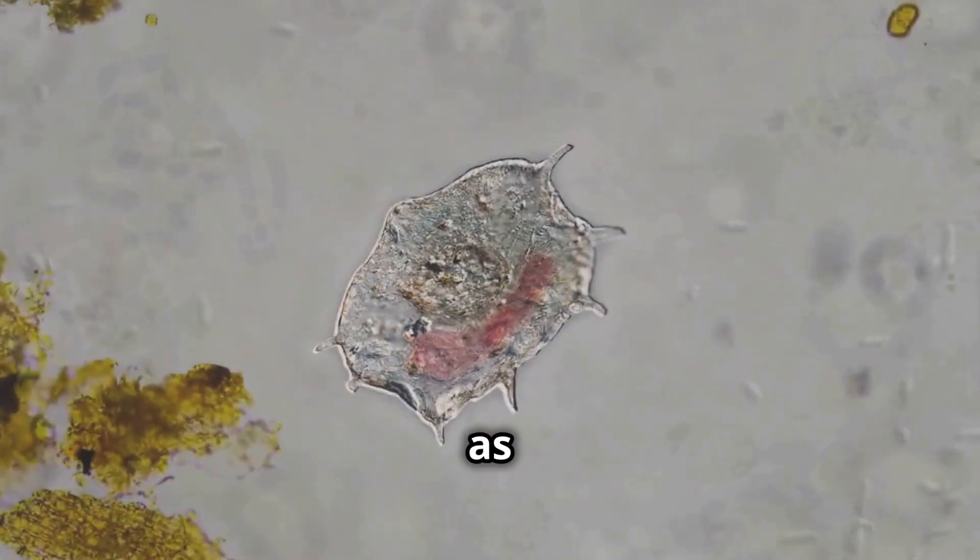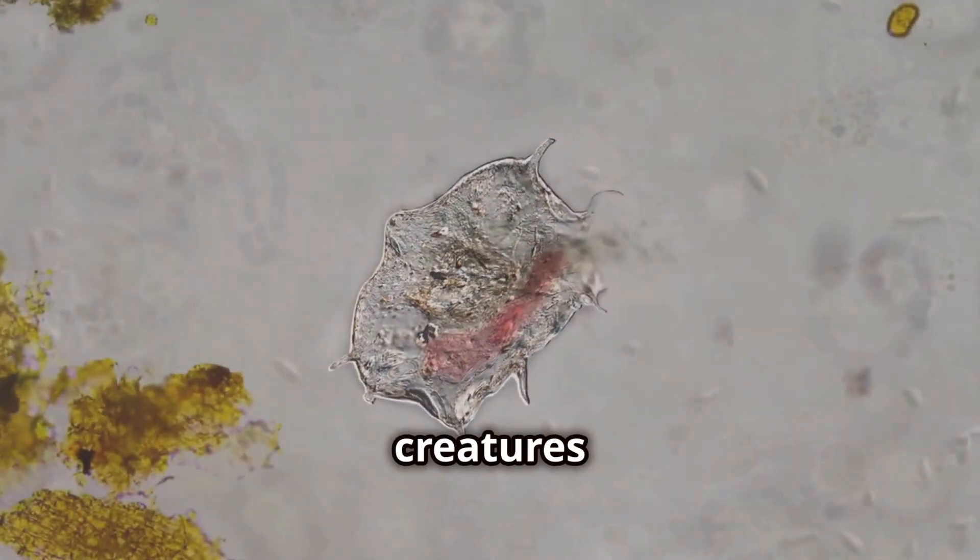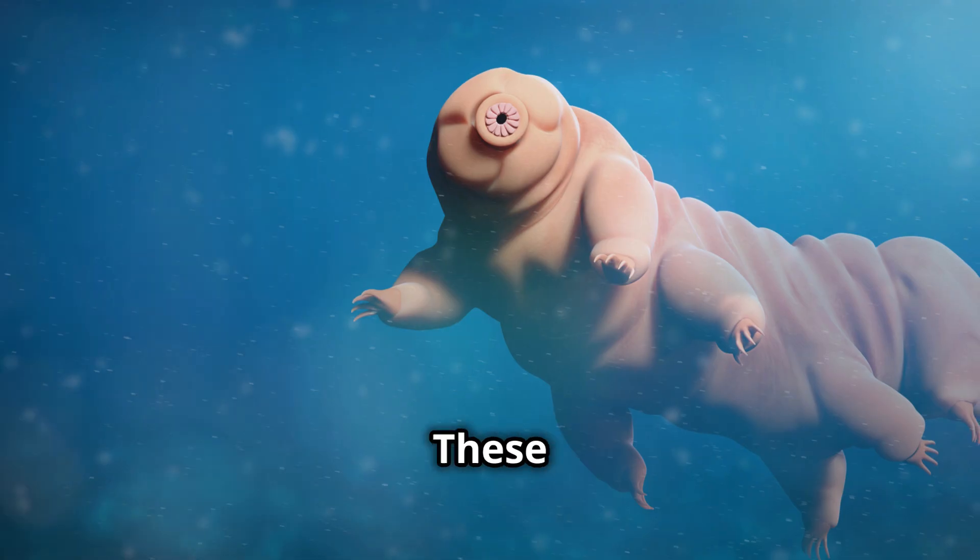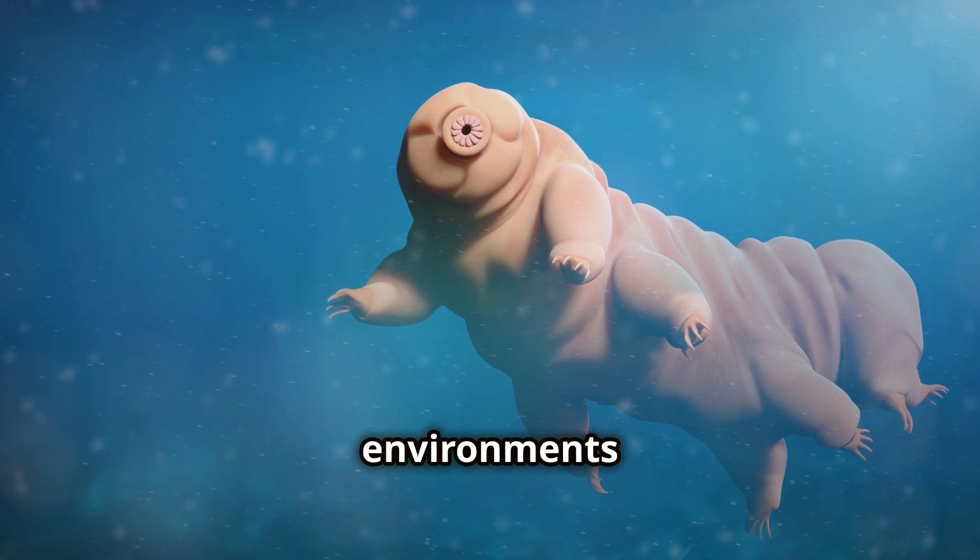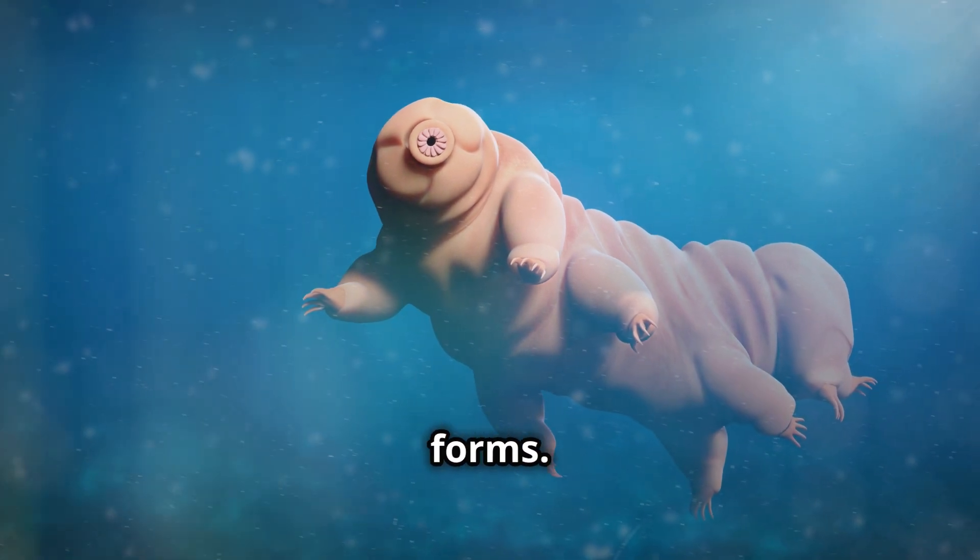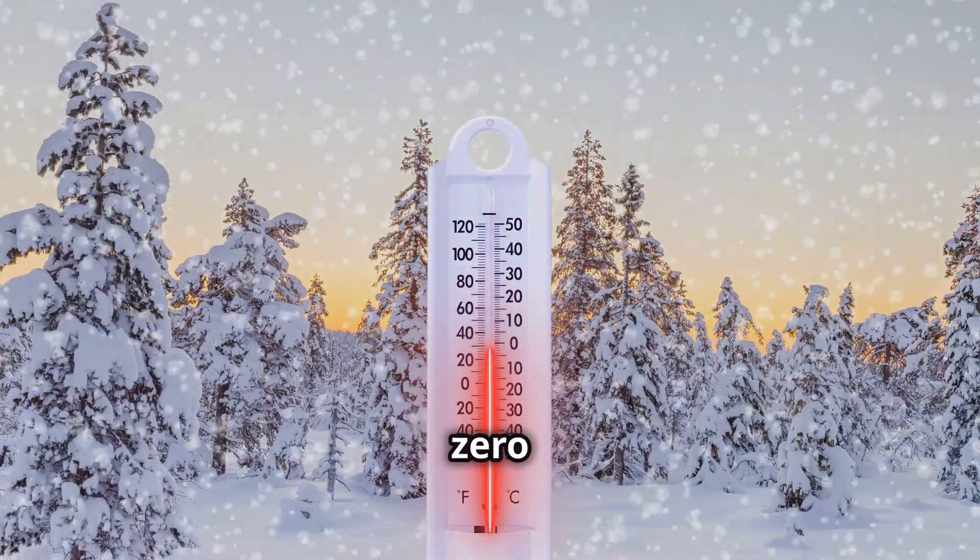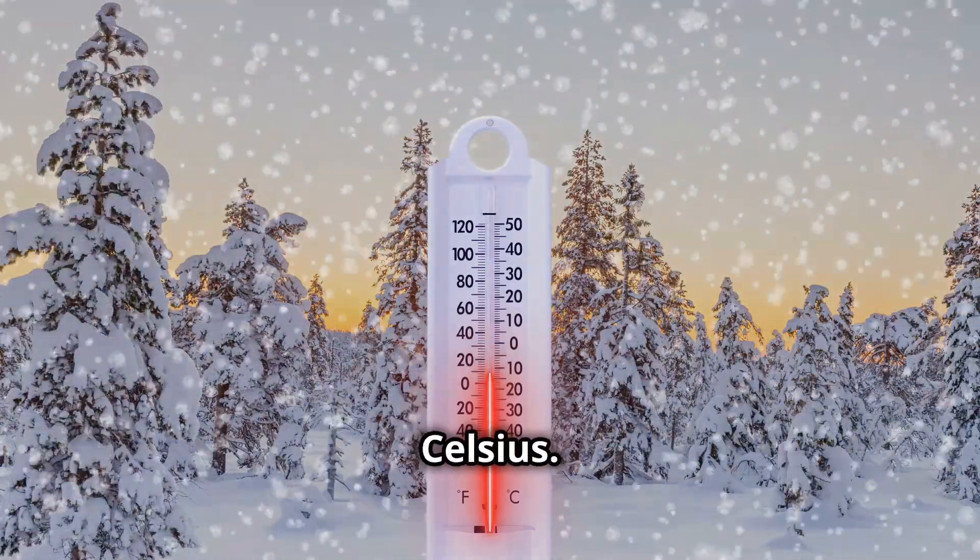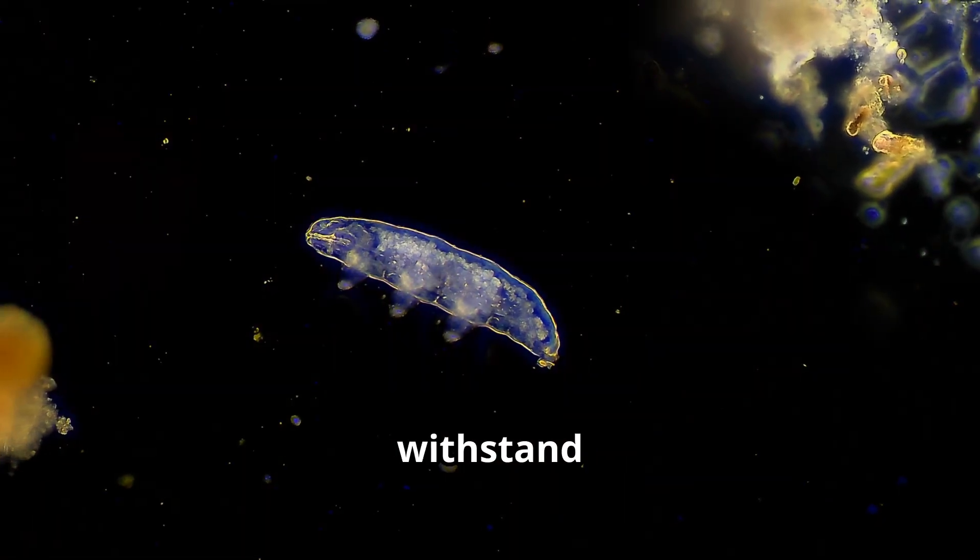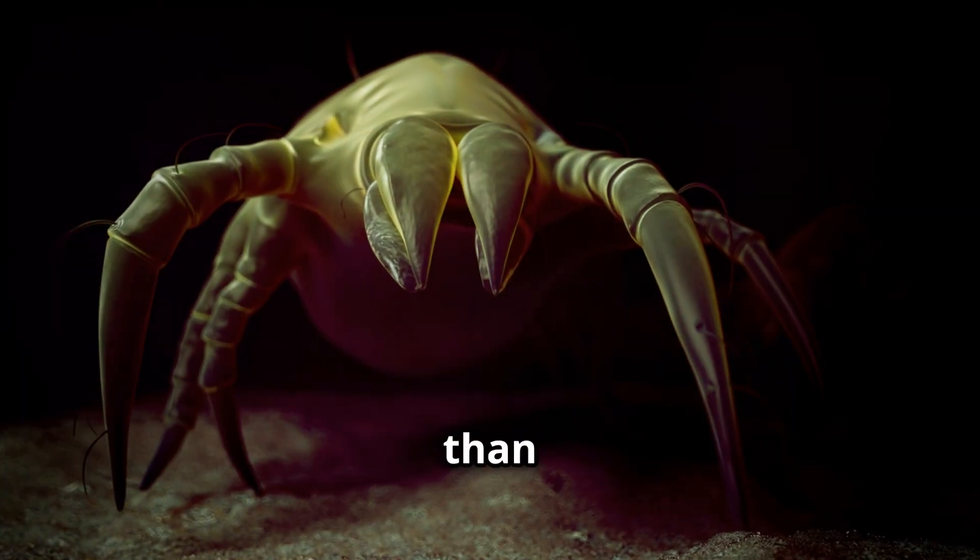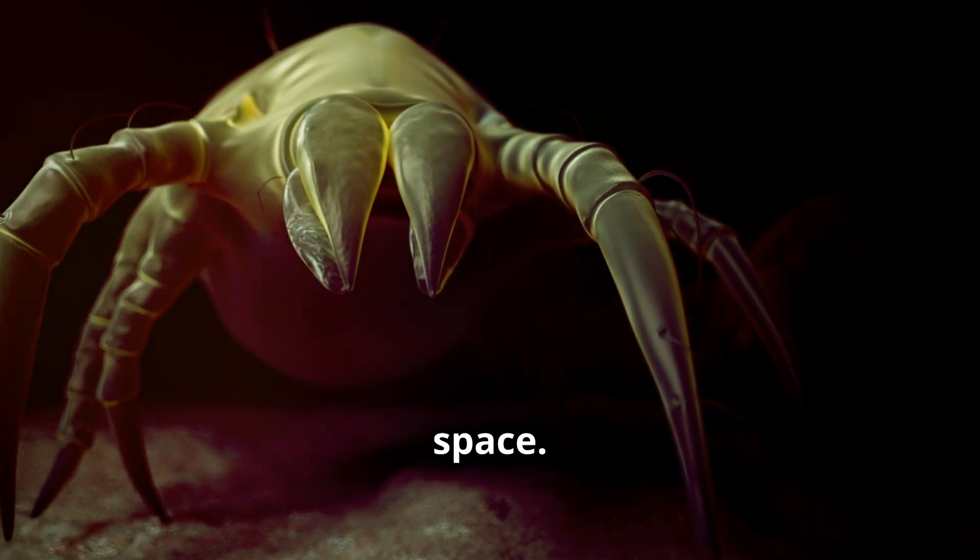Tardigrades, also known as water bears, are microscopic creatures with an incredible ability to survive extreme conditions. These tiny animals can endure environments that would be fatal to most other life forms. They can survive temperatures from just above absolute zero to over 150 degrees Celsius. Tardigrades can also withstand immense pressures, radiation doses hundreds of times higher than lethal levels for humans, and even the vacuum of space.